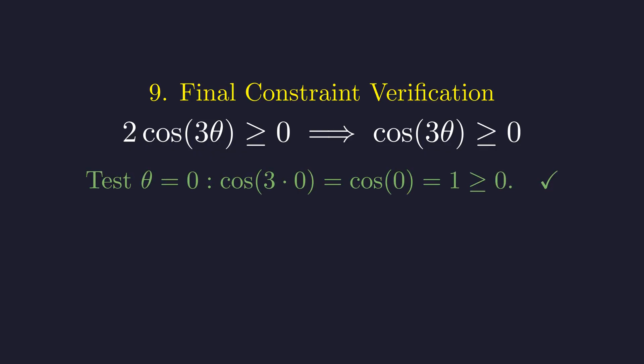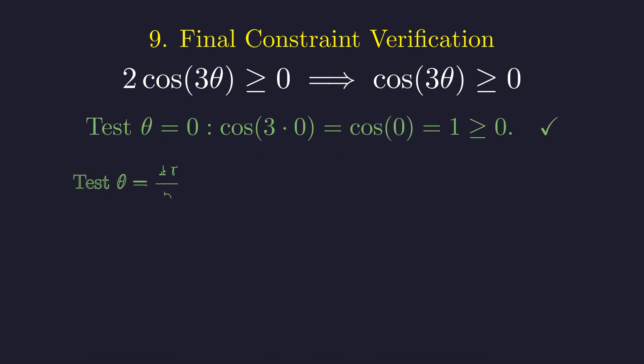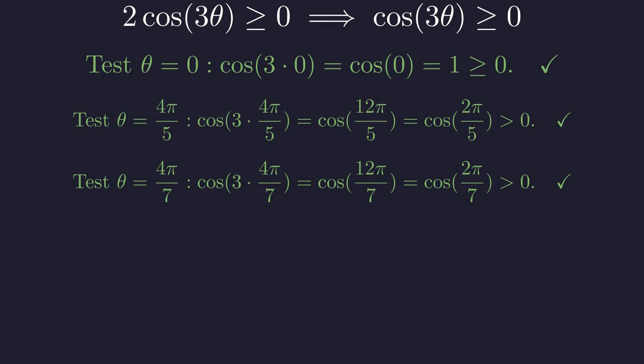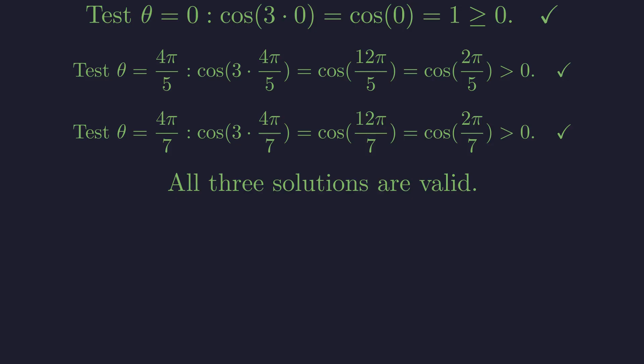Theta equals 0. Cosine of 0 is 1, which is definitely positive. Theta equals 4 pi over 5. We need cosine of 12 pi over 5. Since cosine repeats every 2 pi, this is the same as cosine of 2 pi over 5, which is also positive. Theta equals 4 pi over 7. Cosine of 12 pi over 7 reduces to cosine of 2 pi over 7, which is positive as well. All three candidates pass the test. These are our complete set of solutions.